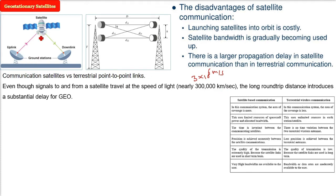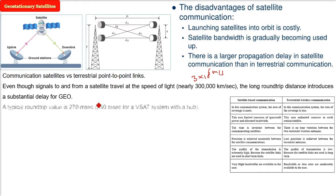Even though signals to and from a satellite travel at the speed of light, there is a long round trip, and this introduces latency — a substantial delay for geostationary satellites. A typical round-trip delay is 270 milliseconds; if you are using a VSAT system with a hub, it will be 540 milliseconds.